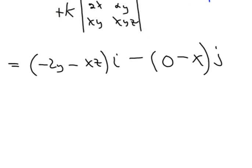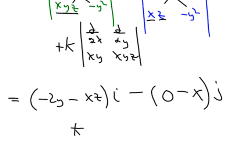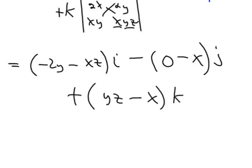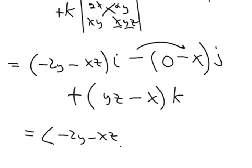And then lastly, plus k times: the partial of xyz with respect to x is yz, minus the partial of xyz with respect to y, which is x. So the curl vector can be written as the tuple: negative 2y minus xz, x, yz minus x — distributing the negative sign gives us positive x for the j component. So the full curl vector is (−2y − xz, x, yz − x).